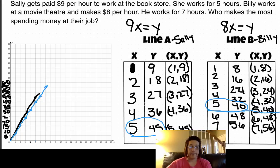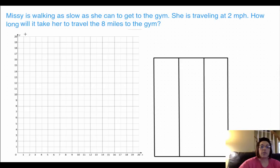Okay. So we'll come back and look at one additional example before you move on and do your own. Okay, so in this example, Missy is walking as slow as she can to get to the gym. She travels at two miles per hour. How long will it take her to travel the eight miles to the gym?